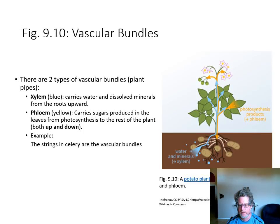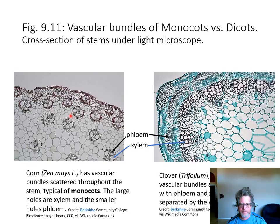Here's a cutaway of a stem of a corn plant and a stem of a clover. The corn plant is the monocot and has bundles scattered throughout of xylem and phloem — xylem are the bigger holes, phloem the smaller ones. In dicots like clover, phloem is on the outside, xylem on the inside, and in between is a layer of stem cells called the vascular cambium which gives rise to new xylem and new phloem.